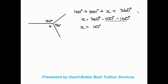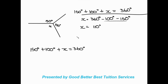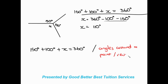Remember, after you've made your statement, you need to include your reason. So you write: 150 degrees plus 100 degrees plus x equals 360 degrees, and next to it — either in brackets or separated by a forward slash — you write the reason: angles around a point, or alternatively, revolution.